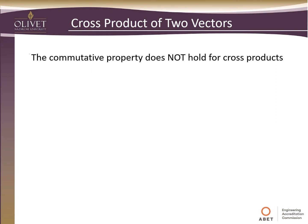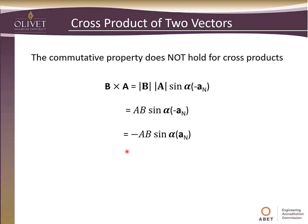The commutative property does not hold for cross products — it did for dot products, but not here. For example, B cross A: taking magnitude of B times magnitude of A times sine of the angle gives us the scalar A·B·sine(alpha), but in the negative A_n unit vector direction. Bringing the negative outside, this is by definition the negative of A cross B. So B cross A equals negative A cross B — not equal to A cross B. That's an important thing to keep in mind.